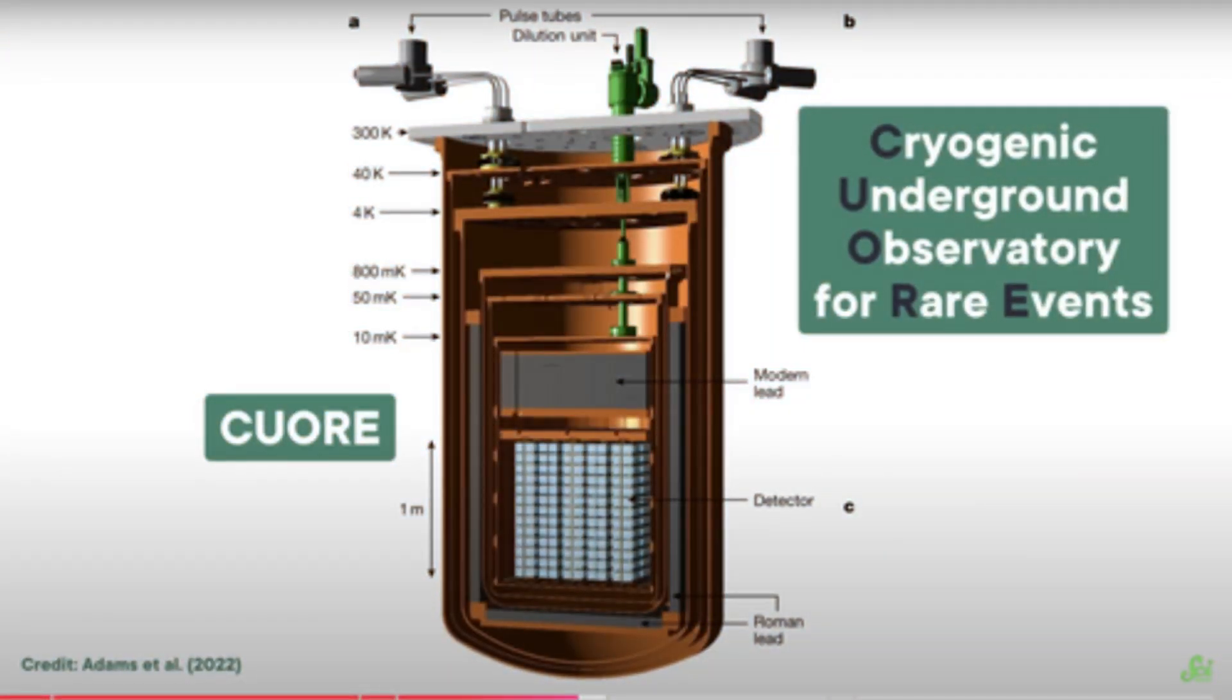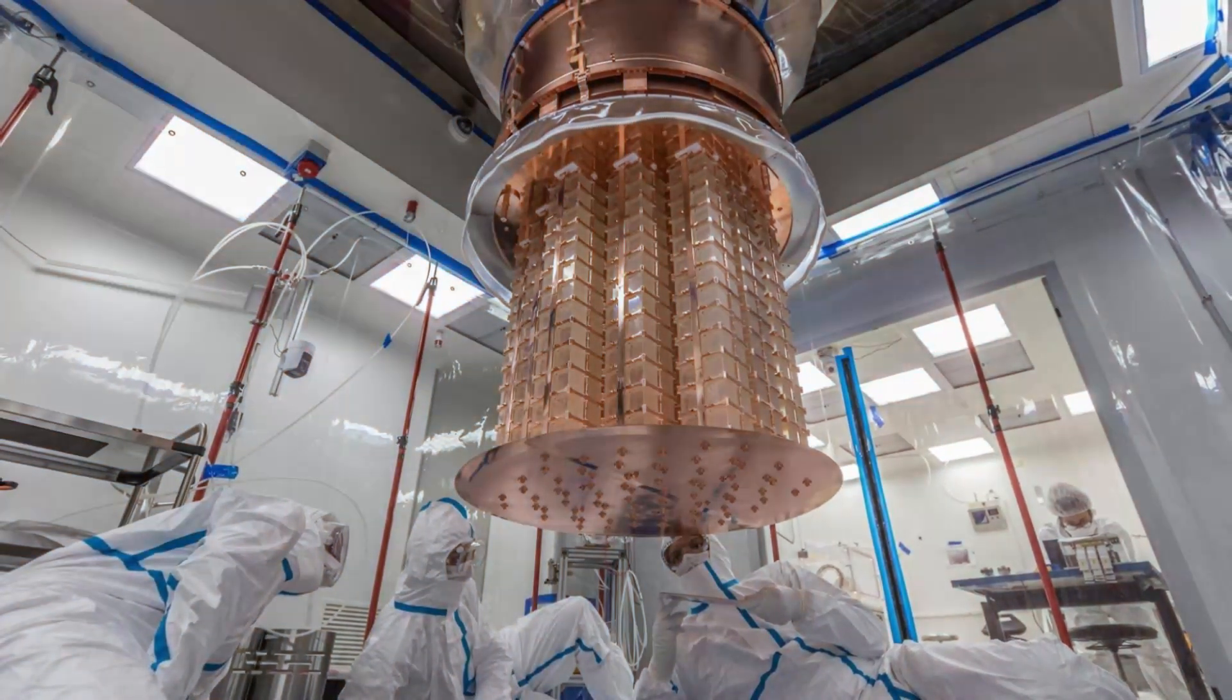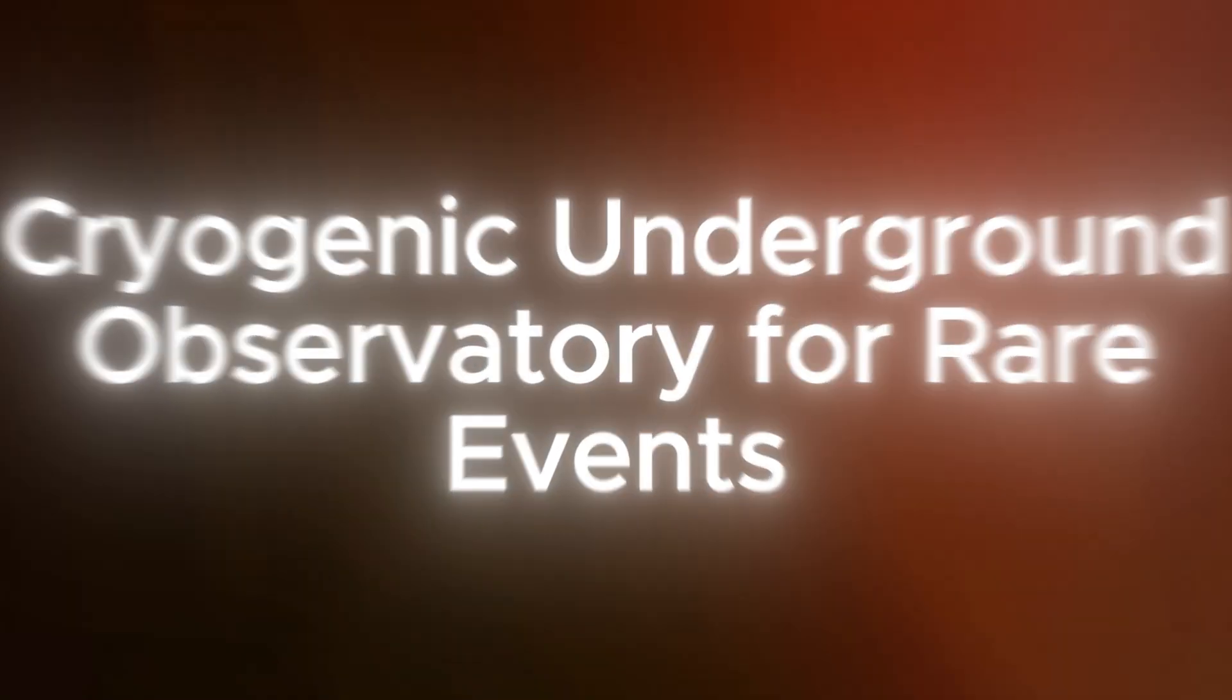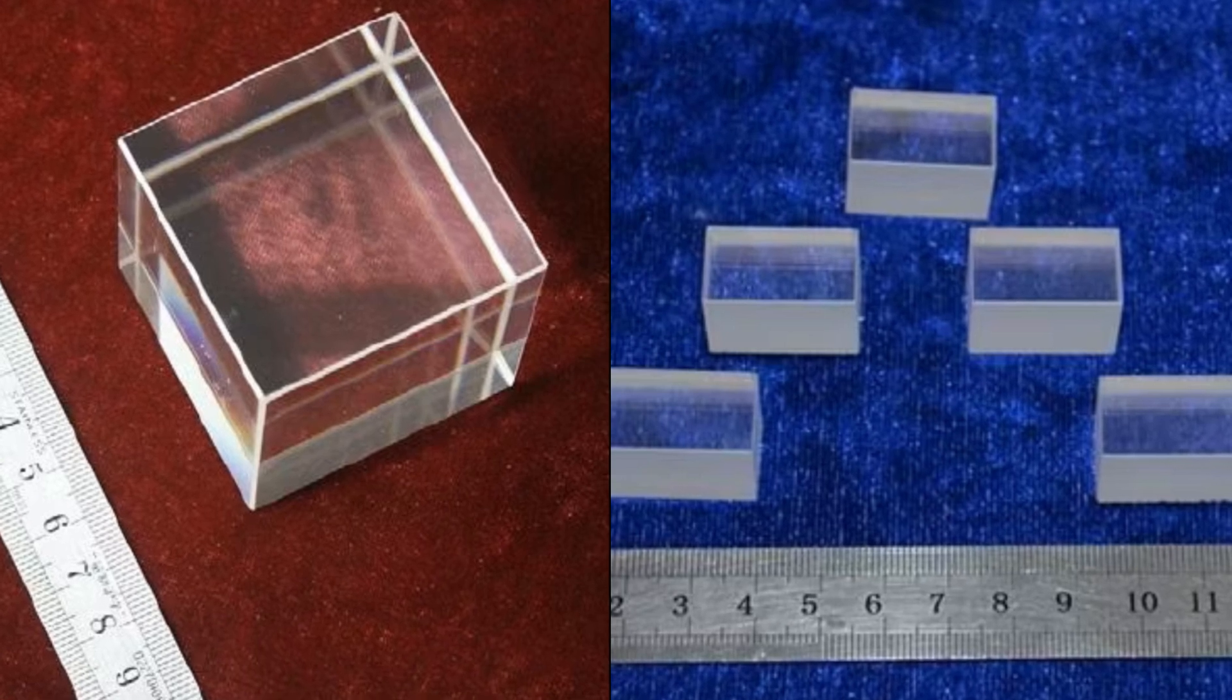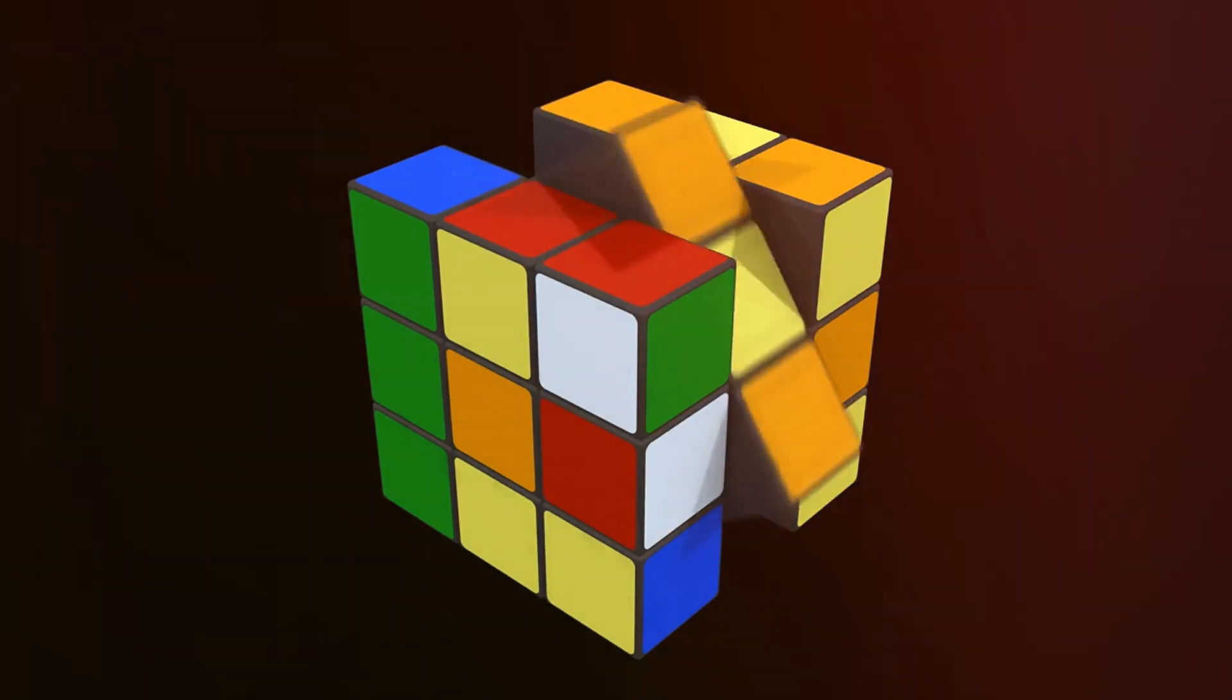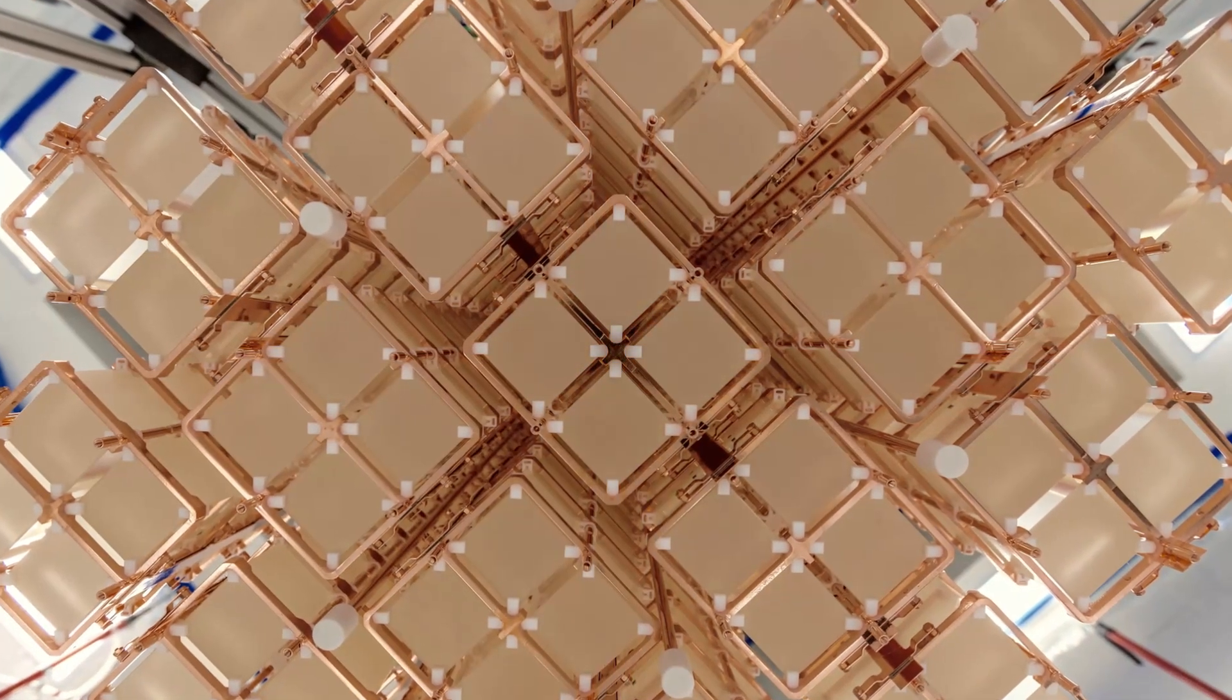The setup was meticulous. CUOR, which stands for the Cryogenic Underground Observatory for Rare Events, was a massive leap in experimental physics. The heart of the experiment consisted of nearly 1,000 blocks of tellurium oxide crystals, each about the size of a Rubik's cube. These crystals were arranged into tall towers and placed in the coldest cubic meter in the known universe.